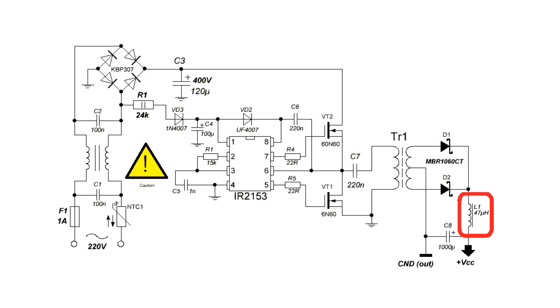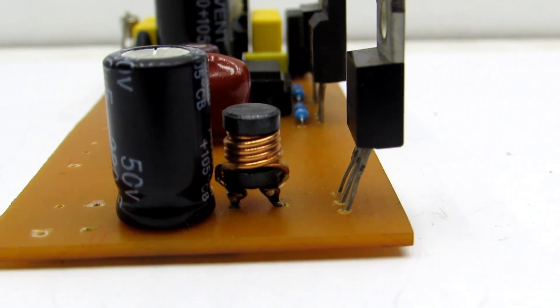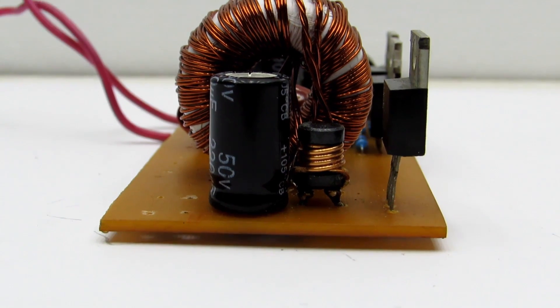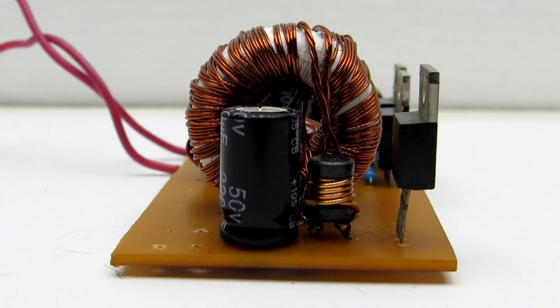Next is a small inductor L1. You can exclude it and replace it with a jumper. Its parameters aren't critical. I wound 7 turns of 1mm wire on a small ferrite shaped as a dumbbell.